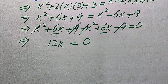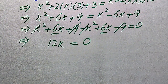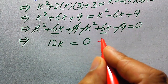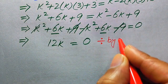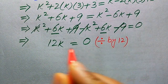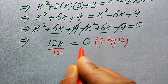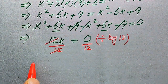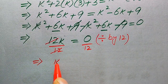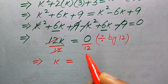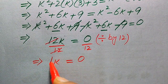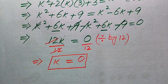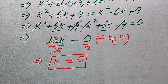Since our target is to find the value of k, we divide both sides by 12. The 12s cancel and we get k equals 0 divided by 12, which equals 0. So in this method we find the value of k equals 0.